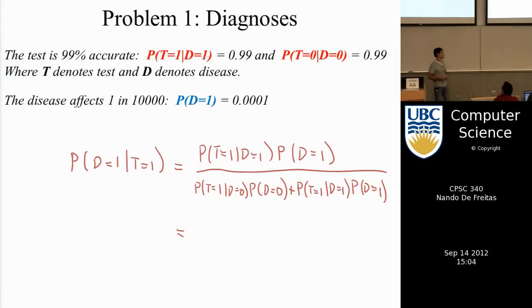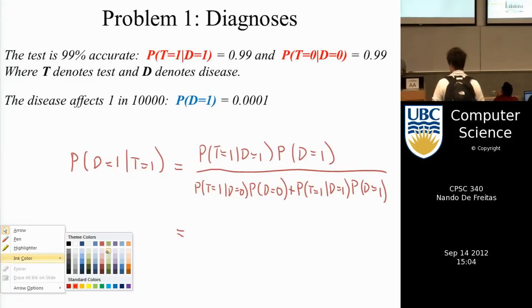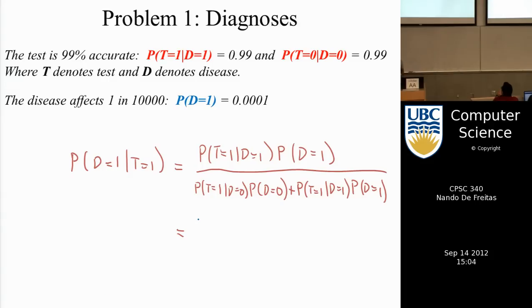Now who did the homework? What's the answer? Less than one percent. In particular, the exact answer is zero point zero zero zero nine eight nine eight. Does that agree with my notes? Yes. So I'll ask again, should you be worried? No.